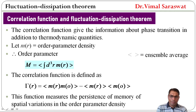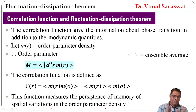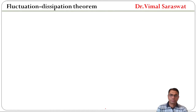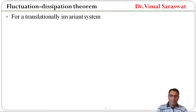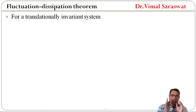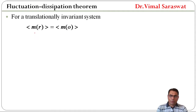This function measures the persistence of memory of spatial variation in the order parameter density. For a translationally invariant system — meaning the system does not change under any translation — the ensemble average of M(r) equals the ensemble average of M(0).